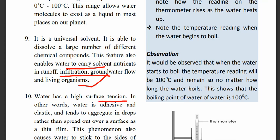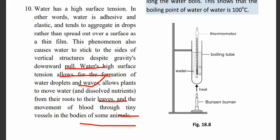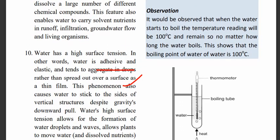Being a universal solvent, water is able to carry dissolved nutrients in runoff, filtration, groundwater flow, and living organisms. Water also has a high surface tension — it is adhesive and elastic and tends to aggregate in drops. This is why sometimes you can see a mosquito or other insects just standing on the water and not sinking. Water's high surface tension allows the formation of water droplets and waves, and allows plants to move water and dissolved nutrients from their roots to the leaves, and also allows the movement of blood through tiny vessels in the bodies of animals.